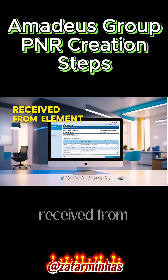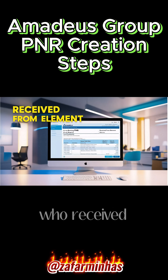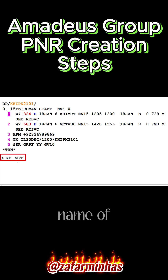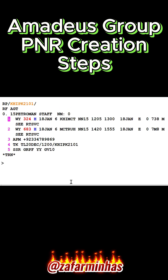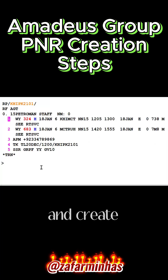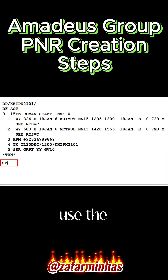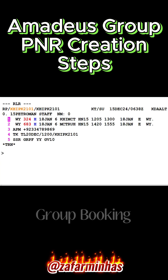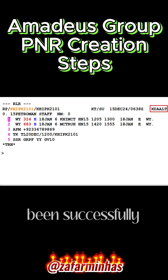Step 6: Received from element. To record who received or gave the booking, use the RF transaction followed by AGT and the name of the person. Step 7 — the final step — is end transaction. To save the changes and create the PNR, use the ER transaction for end transaction and redisplay PNR, then press Enter. Our group booking PNR has now been successfully created.